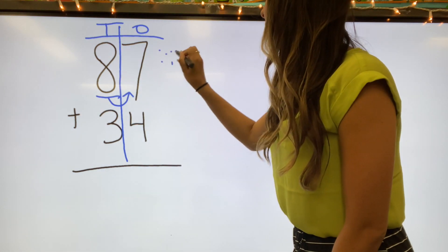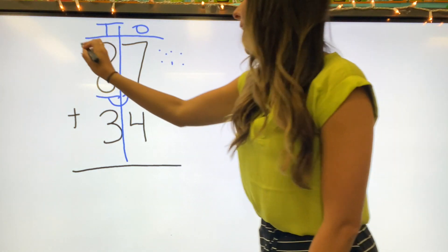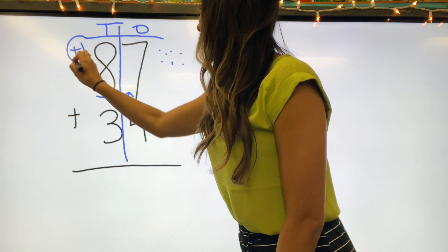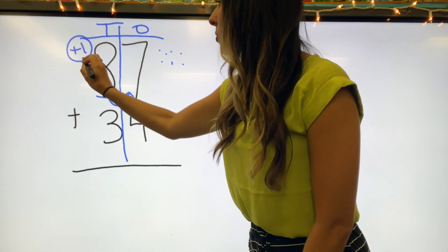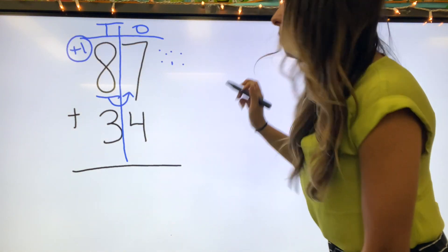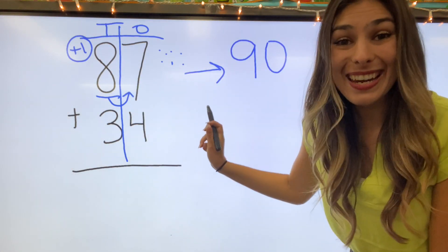One, two, three, four, five, six, seven. That is greater than five. So I'm going to add one to my ten. So now what is eight plus one? Eight plus one equals nine. So I'm going to round 87 to 90.